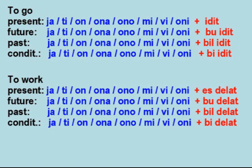To Go: Present — Oni Idit (They are going). Future — Oni Bu Idit (They will go). Past — Oni Bill Idit (They went). Conditional — Oni Bi Idit (They would go). To Work: Present — Oni Es Delat (They are working). Future — Oni Bu Delat (They will work). Past — Oni Bill Delat (They worked). Conditional — Oni Bi Delat (They would work).